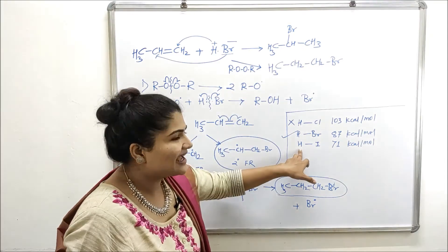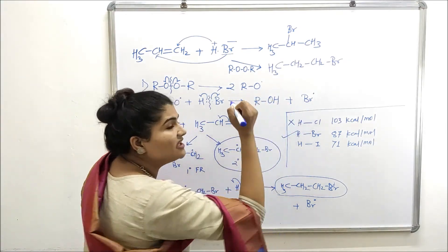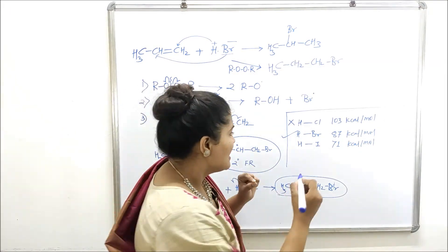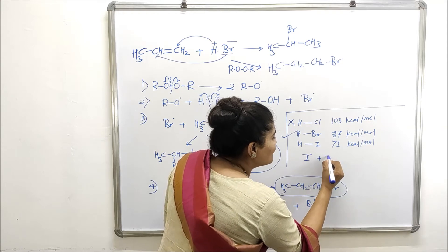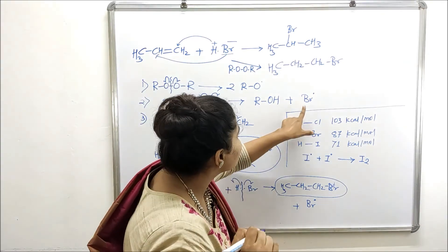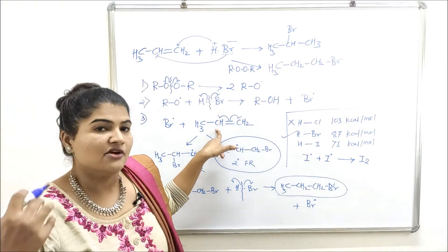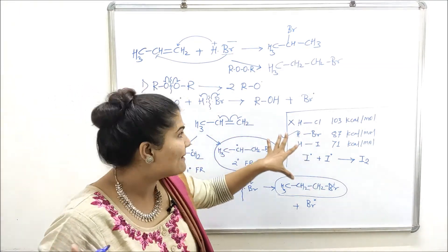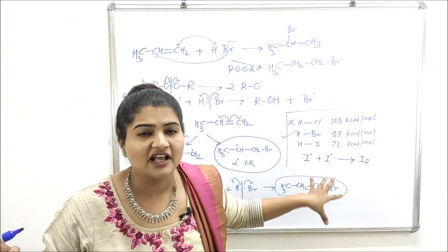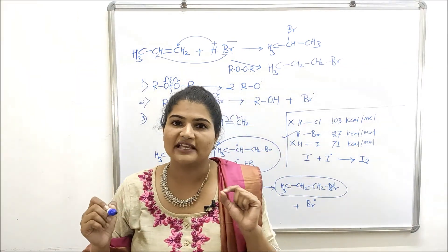You might think the alkoxy radical can break the H–I bond, and yes it can — iodine free radicals will form. However, iodine free radicals are so reactive that as soon as they form, they spontaneously react with each other to produce iodine molecules (I₂). Therefore, the iodine free radical never attacks the alkene molecule, and the mechanism does not proceed. This is why HI also does not show the peroxide effect.